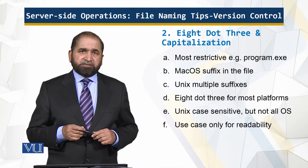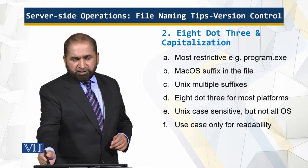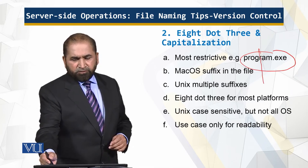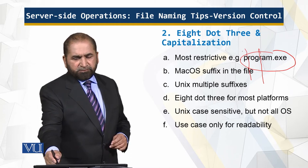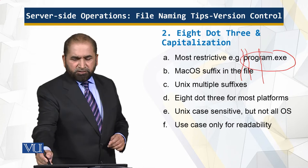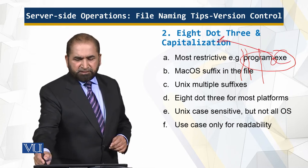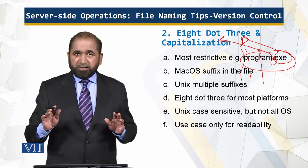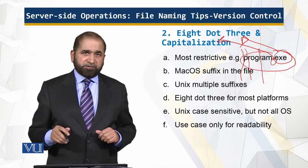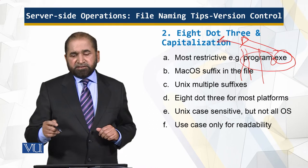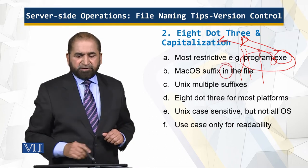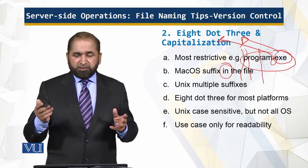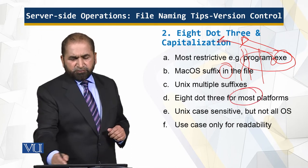8.3 and capitalization. What is 8.3? It is the most restrictive naming program — for example, up to 8 characters before the dot and 3 characters for the file extension. This is the most restrictive naming convention, and it is going to be supported on different environments. Mac OS takes the suffix from inside the file — the suffix is what comes after the dot. In Unix there are multiple suffixes. 8.3 works for most platforms.